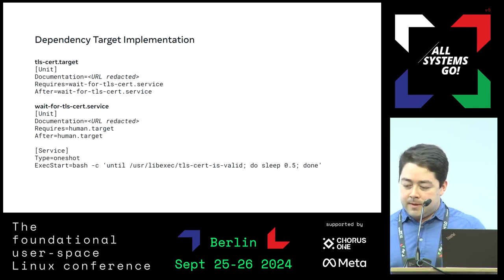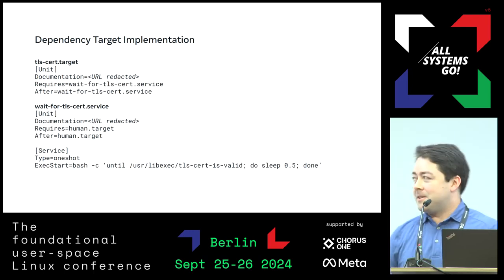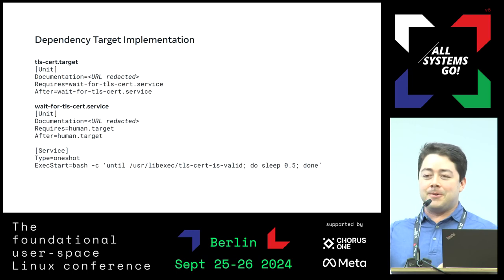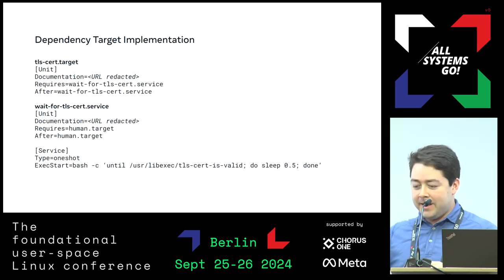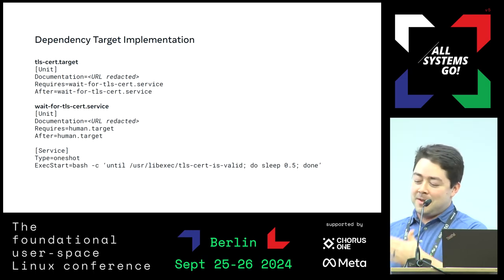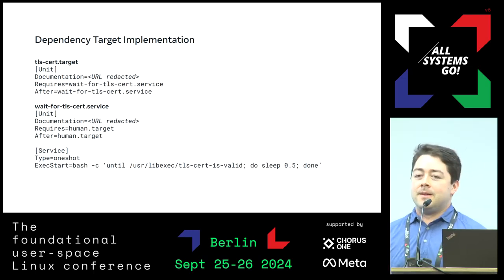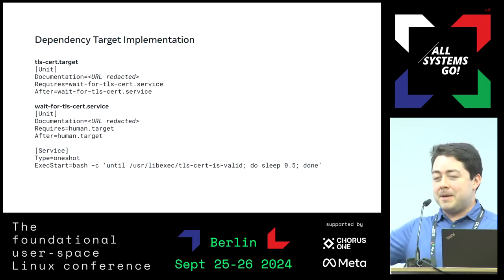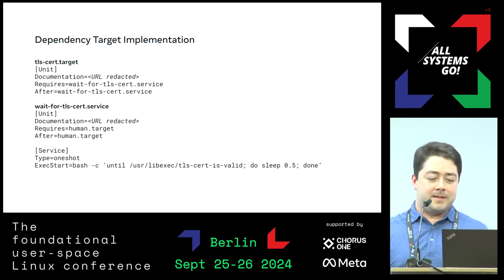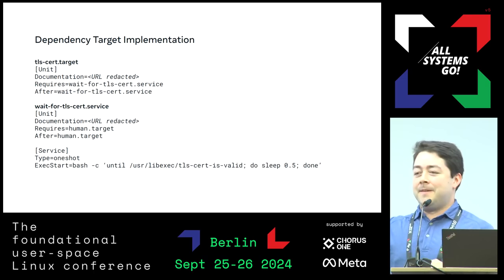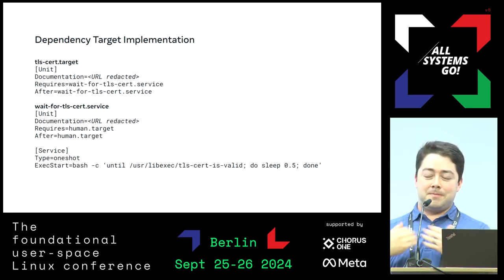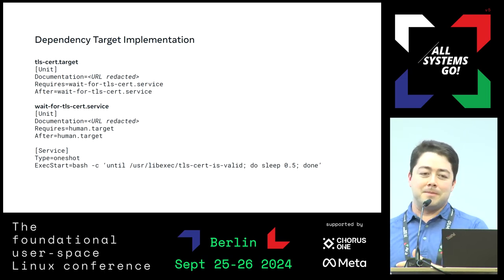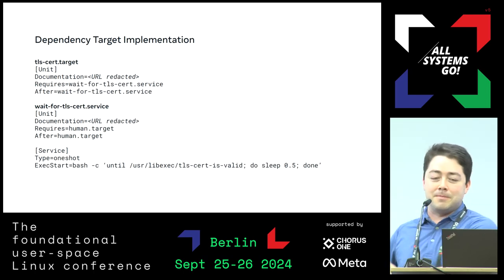This is just how the dependency target is implemented. It's pretty straightforward. There is a service that just waits for the cert to show up, and we depend on that. This is basically the same way that network-online.target works — it's a little bit different because they allow the waiting service to be provided by whatever your network implementation is, whereas we just have this one implementation always.